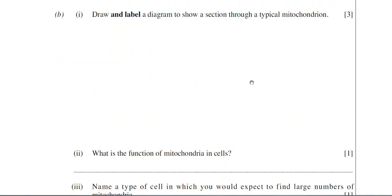This is a question now with three marks, and it's requiring you to draw a diagram and label it. The examiner has highlighted and labelled there in bold. You need to draw a section through a typical mitochondrion.